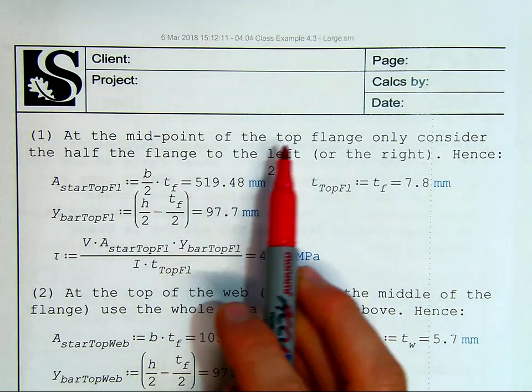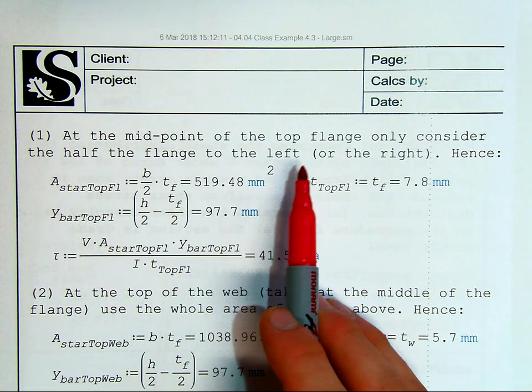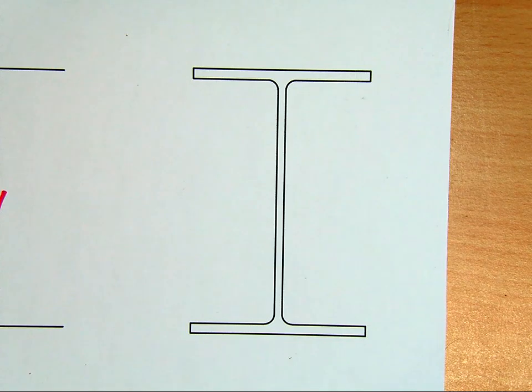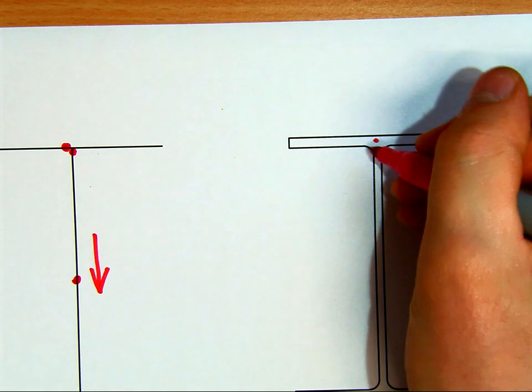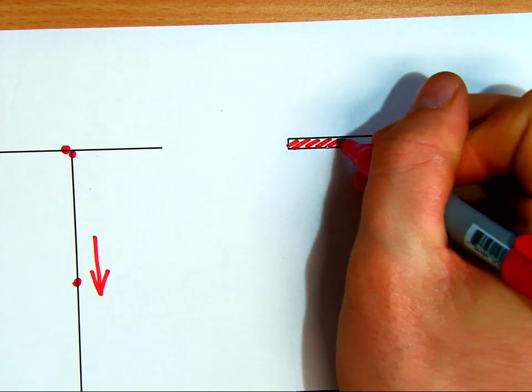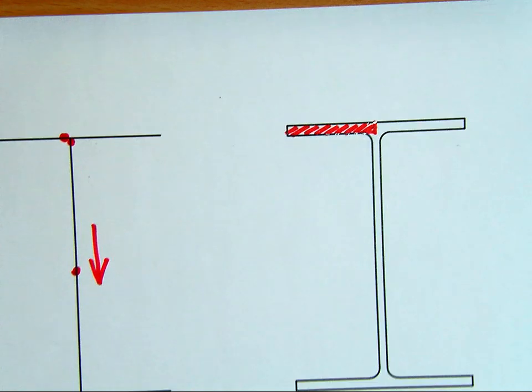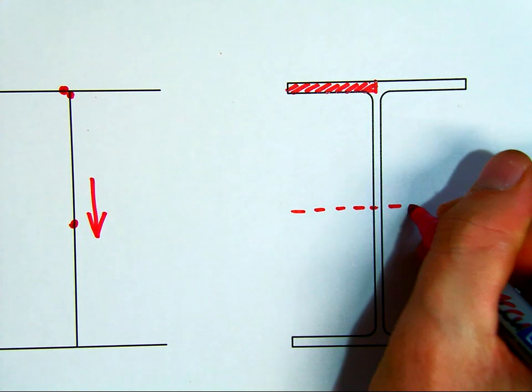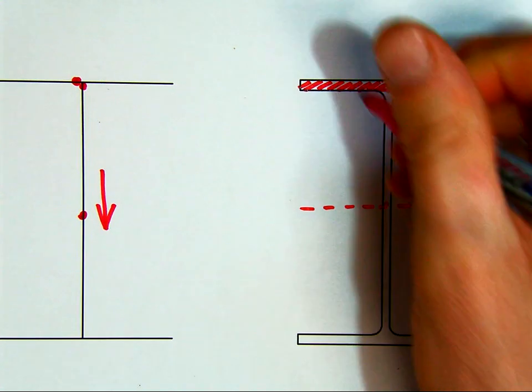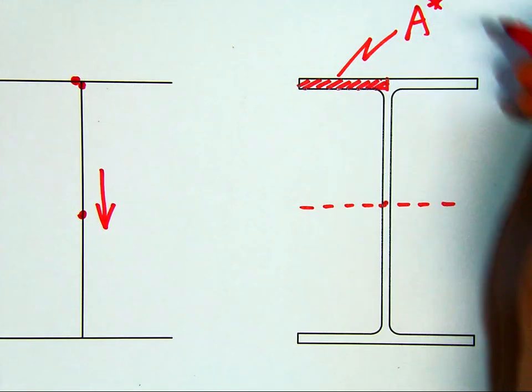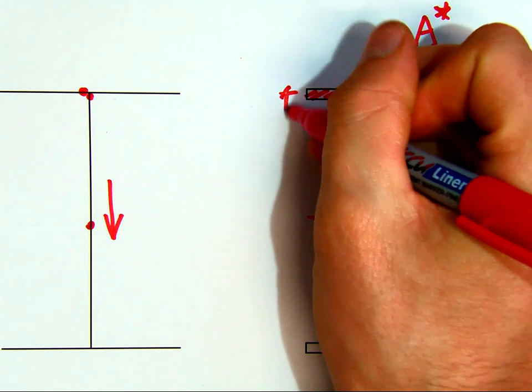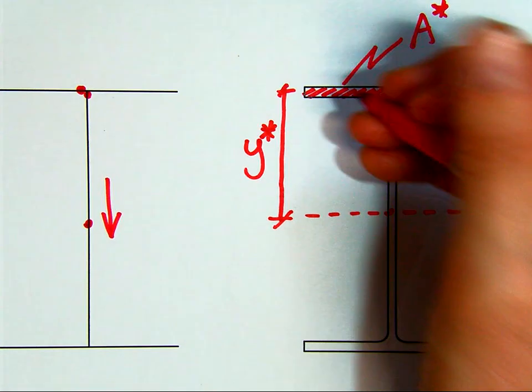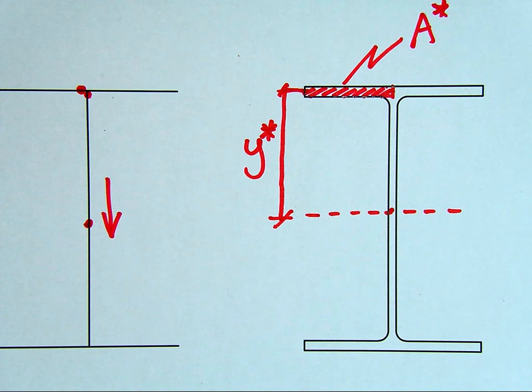I'm going to now fluke to the calculations and start going through them. Firstly, at the midpoint of the top flange, only consider the half of the flange to the left, or the right, depending. So, we now need to calculate the properties for the top. We're going to have a look here. We want the stress in the flange, right at the top. So, we're going to isolate this section out, and use this property, well, the property of this area I've just highlighted, relative to the neutral axis or the centroid of the section.